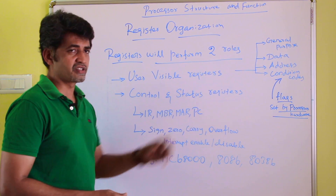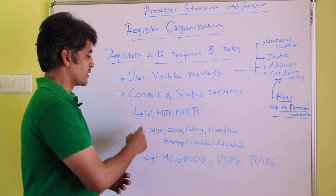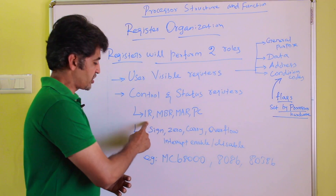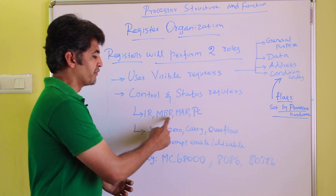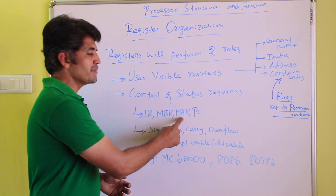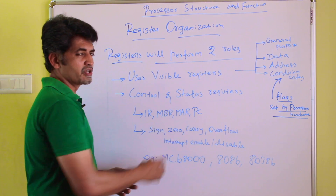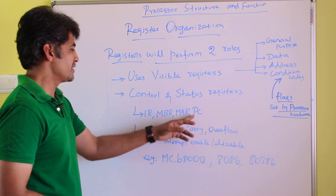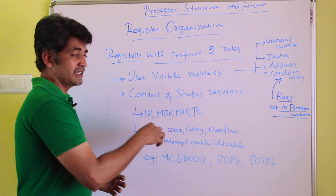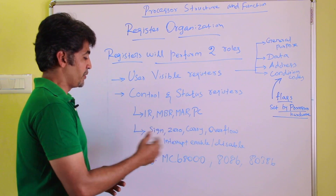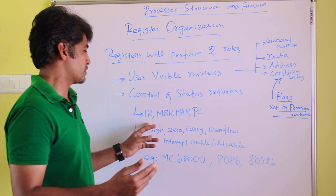The next category is control and status registers. The four major control registers are: IR (Instruction Register), MBR (Memory Buffer Register), MAR (Memory Address Register), and PC (Program Counter). These are the major control registers found inside the CPU. The instruction register is mainly used during the instruction fetch stage.